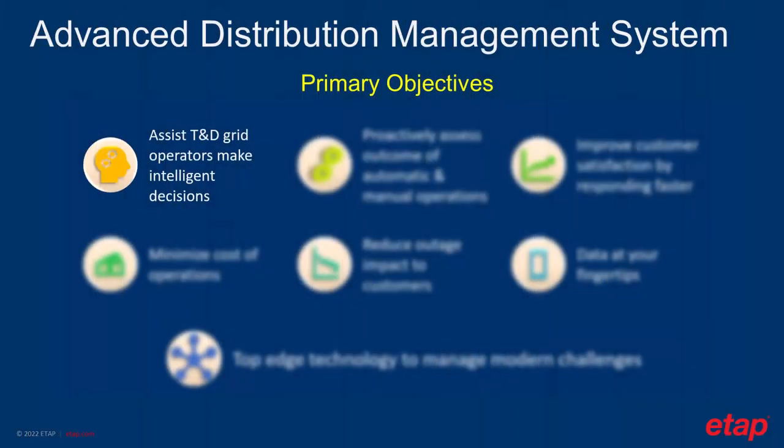In this slide, I have listed some of the objectives that need to be accomplished by an ADMS solution. When I think of ADMS, I think of it as an assistant that allows operators, managers, dispatchers, and maintenance individuals to make better decisions about their respective responsibilities in the utility system. The ADMS must understand in detail the electrical network and its operation and limitations to support, for example, an operator to open the feeder online.